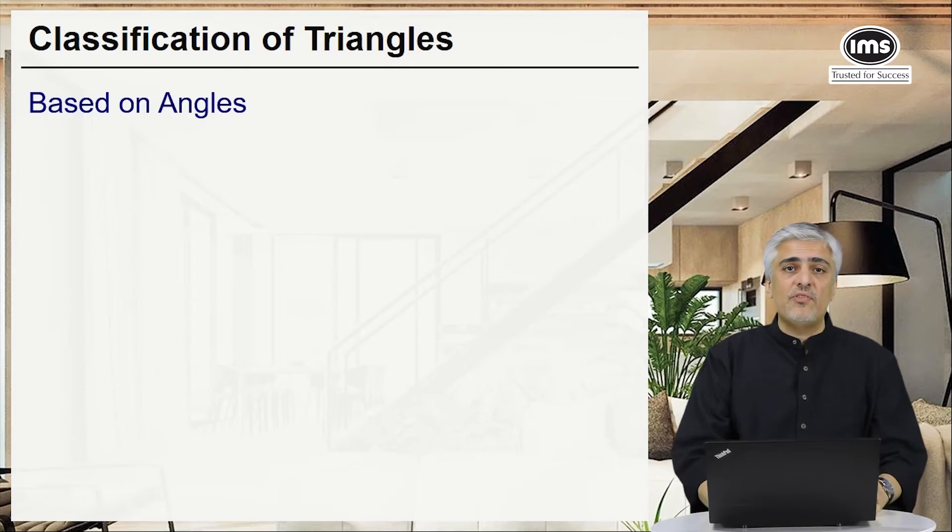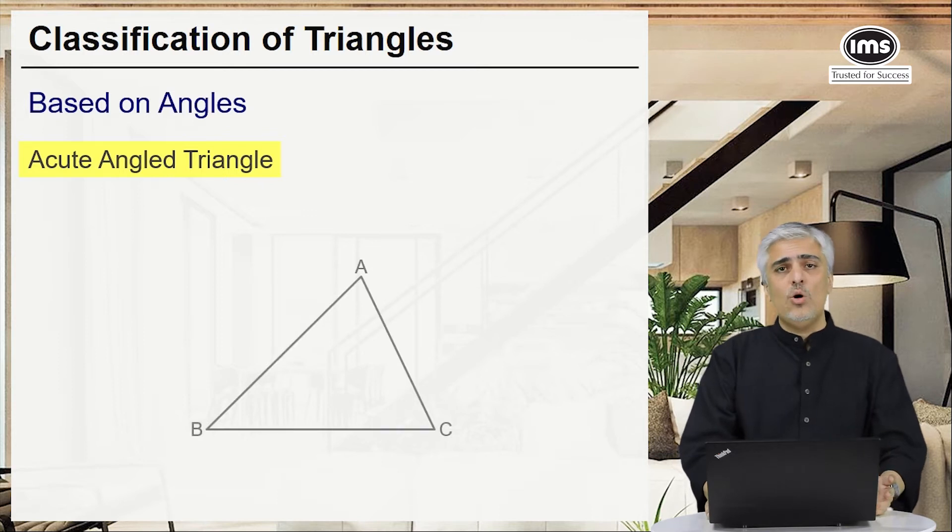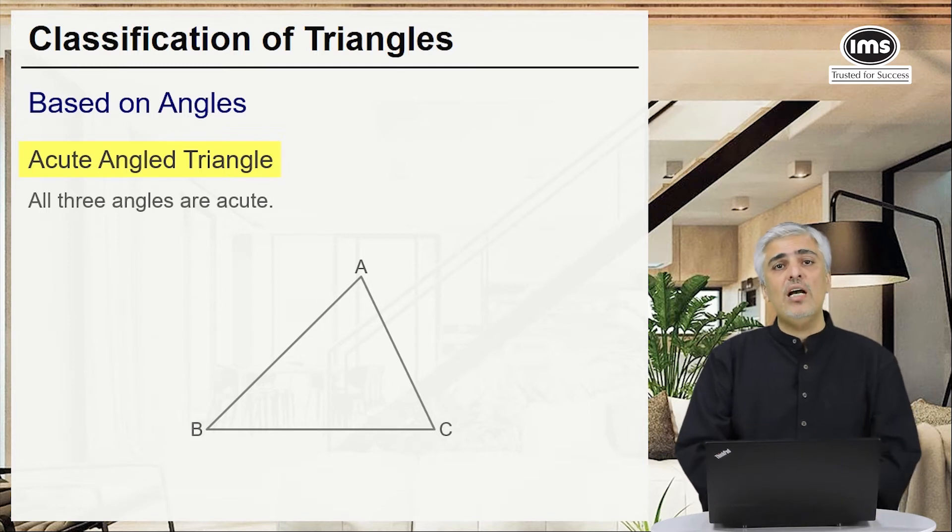Based on angles, what are the different types of triangles I can have? I can have an acute angle triangle. What's an acute angle triangle? In this case, all three angles have to be less than 90, or all the angles have to be acute.